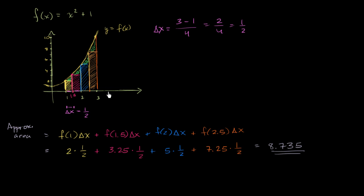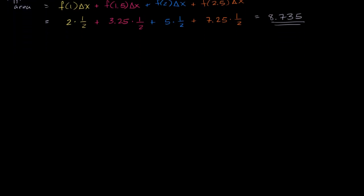In the last video, we attempted to approximate the area under a curve by constructing four rectangles of equal width, using the left boundary of each rectangle — the function evaluated at the left boundary — to determine the height, and we came up with an approximation. What I want to do in this video is generalize things a bit, using the exact same method, but doing it for an arbitrary function with arbitrary boundaries and an arbitrary number of rectangles.